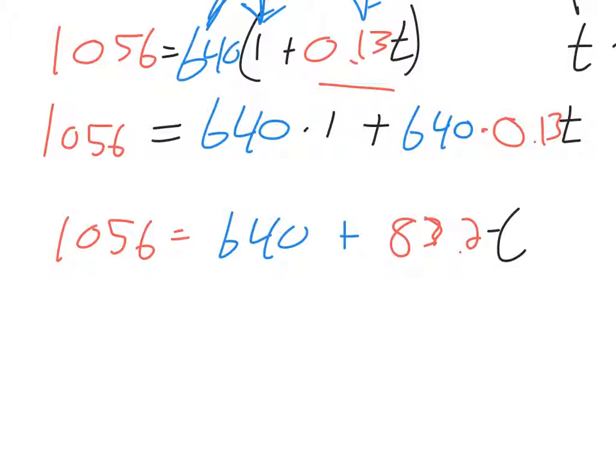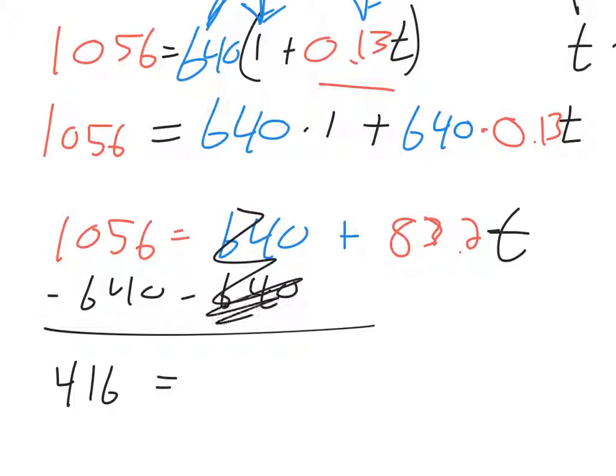Now it's a little easier to get T by itself. You've got to get rid of this 640 here, so you can subtract 640 from both sides. So that's 416. This is gone because you took it away from this side. We're closer to getting T by itself.